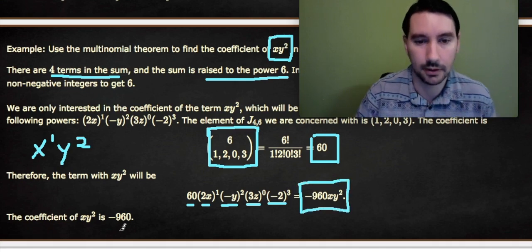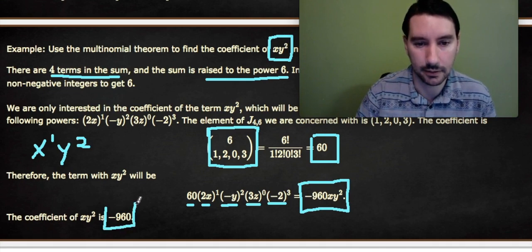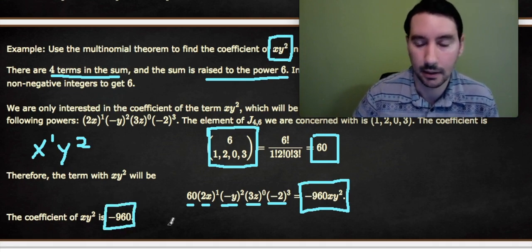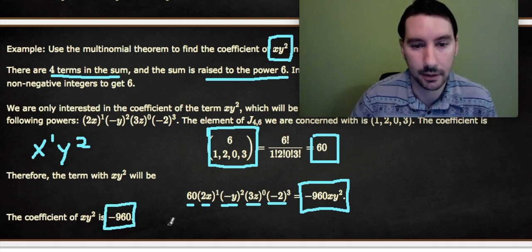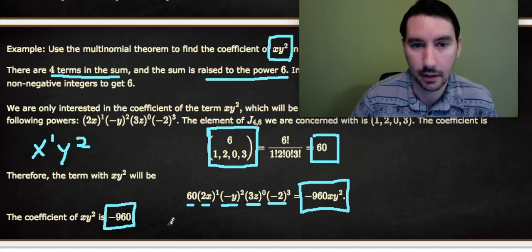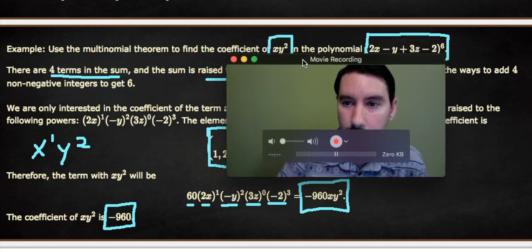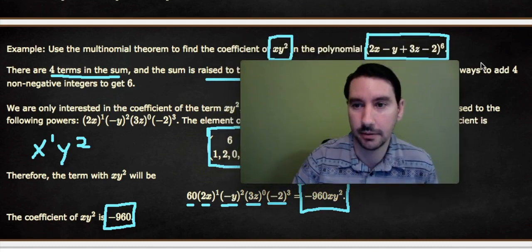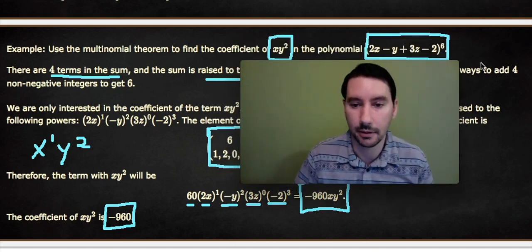So the coefficient of xy² is -960. You can see that it's a lot easier to find the coefficient of xy² that way than trying to multiply out this entire polynomial (2x - y + 3z - 2) to the 6th power and seeing what you eventually end up with.